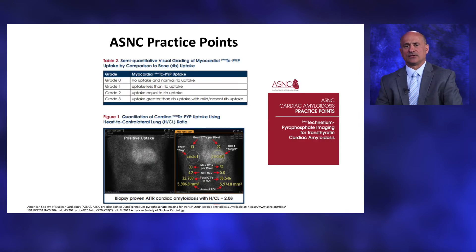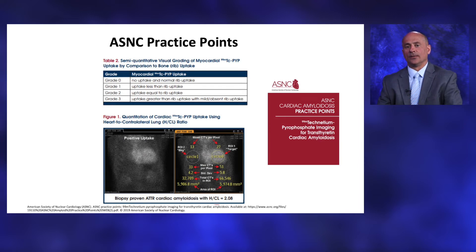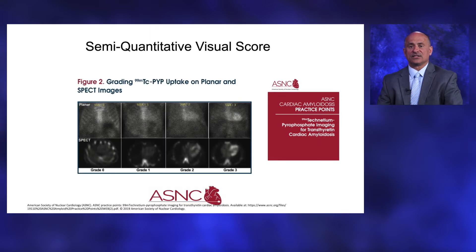This information is taken from the ASNC practice points showing the semi-quantitative visual grading of the TEC-99M PYP scan. A grade of 0 is no uptake in the myocardium and normal rib uptake. Grade 1 is uptake in the heart less than rib uptake. Grade 2 is uptake equal to rib uptake. Grade 3 is uptake greater than rib uptake. On screen you can see examples from no uptake all the way to grade 3, with corresponding SPECT images below.